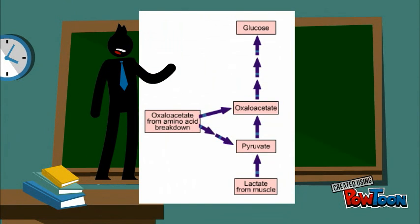The major inputs come from the breakdown of amino acids and from lactate, produced by muscle tissues and transported to the liver by the bloodstream.